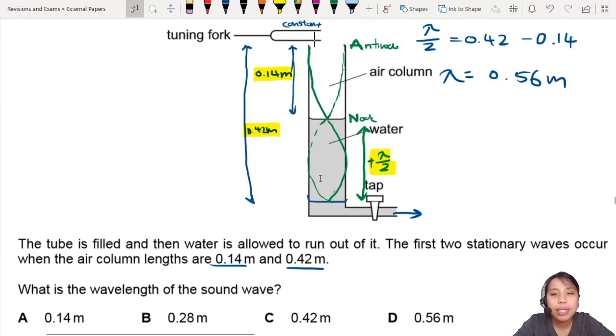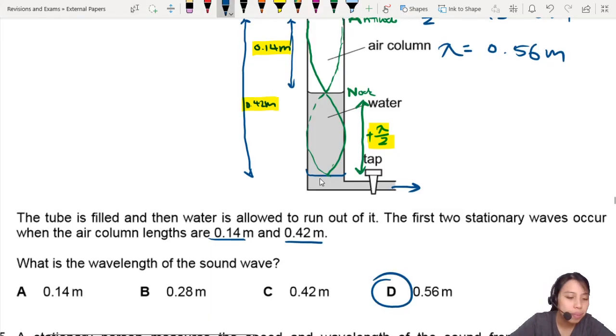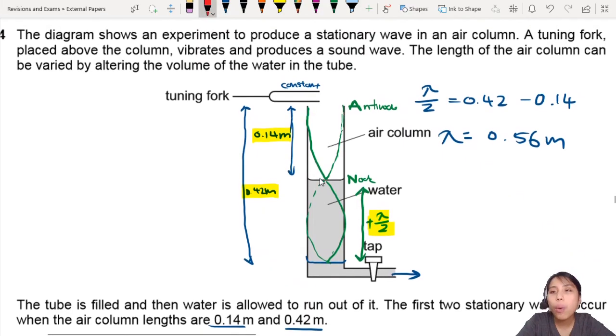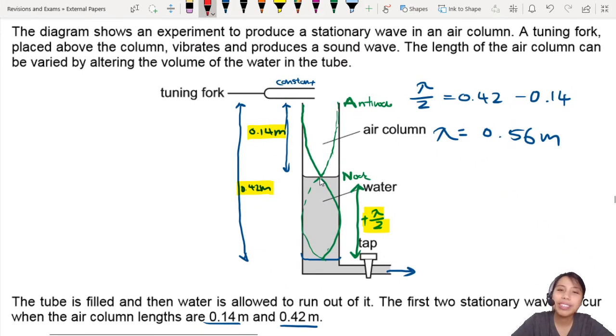Yes. So let's see. The answer is 0.56, closest is D. So that is how you can do questions like this where you have water column stationary wave experiments. That's all for this video. I will see you in the next one.